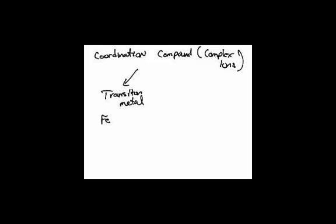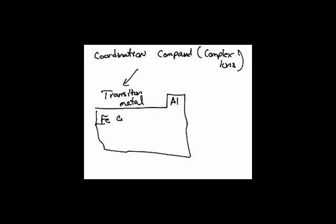If you start at iron and go over to essentially aluminum — this is aluminum right here — basically all the metals: iron, cobalt, nickel, and underneath aluminum you've got gallium. Basically this little block of metals — gold, silver, zinc, etc. These are the metals that form coordination compounds.